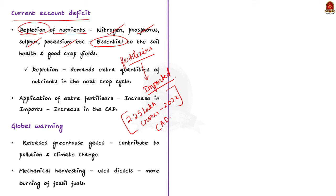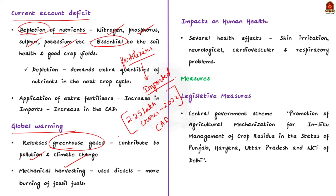The next important issue is global warming. Stubble burning also releases harmful greenhouse gases that contribute to pollution and climate change. Next is the impact on human health. There have been several health effects caused by air pollution from stubble burning, such as skin irritation, cardiovascular problems, and respiratory problems. These are the important issues associated with stubble burning.